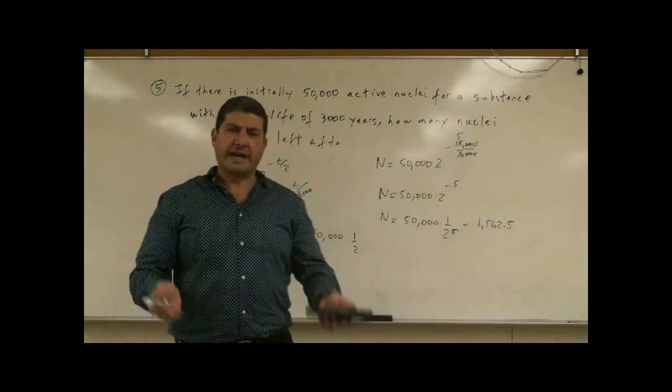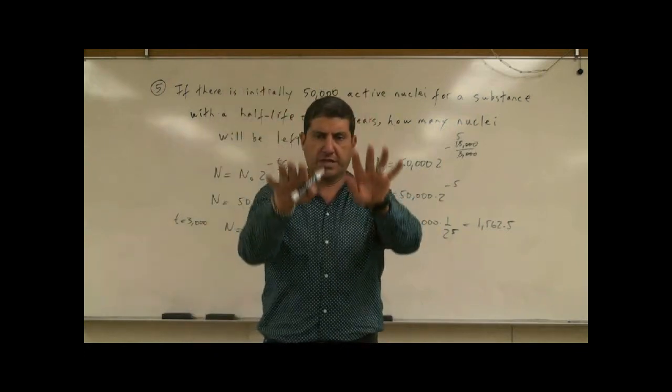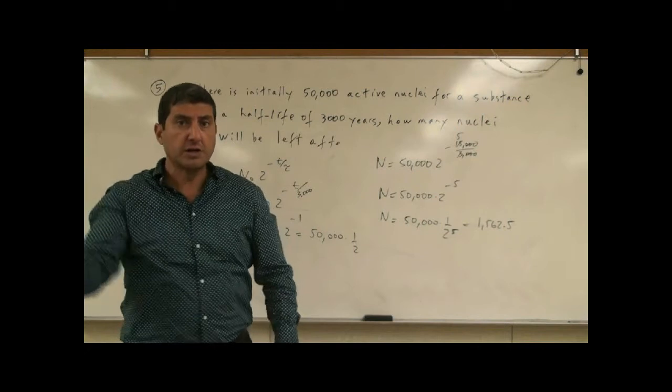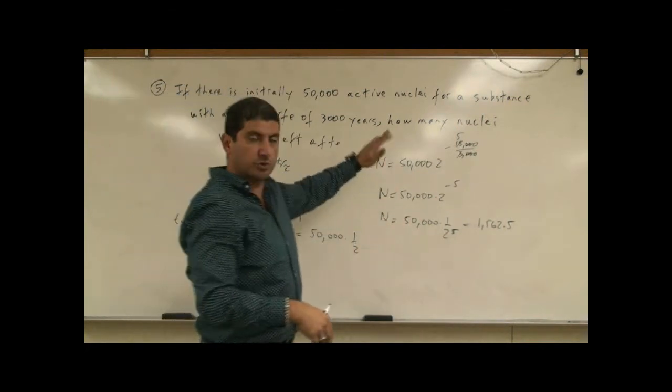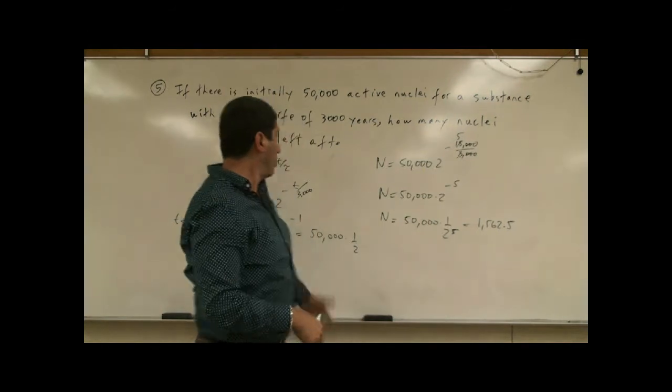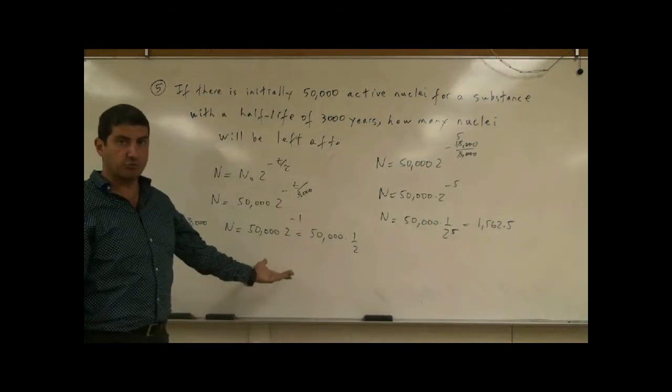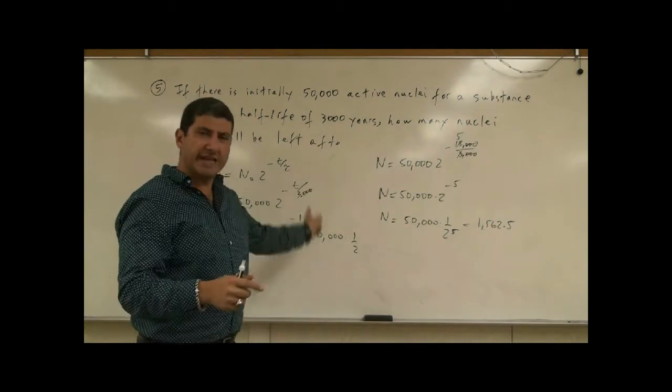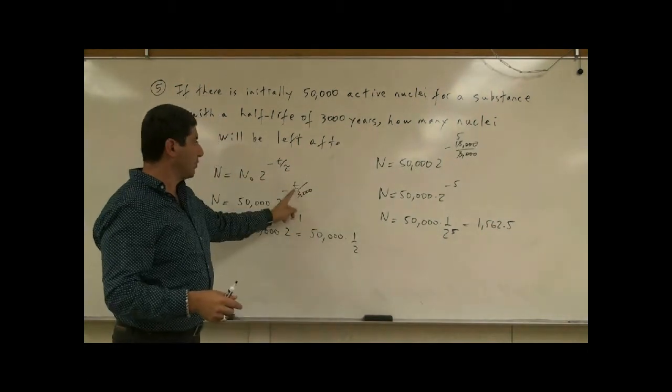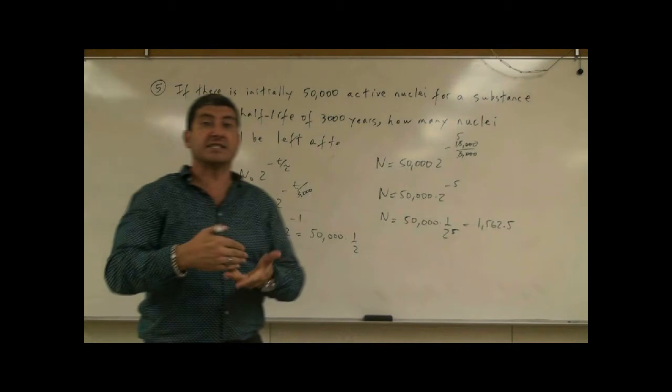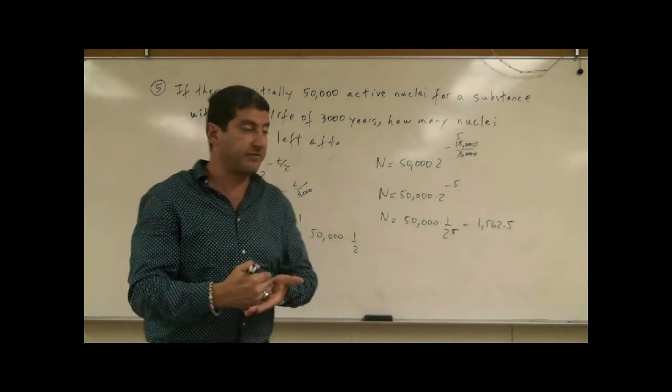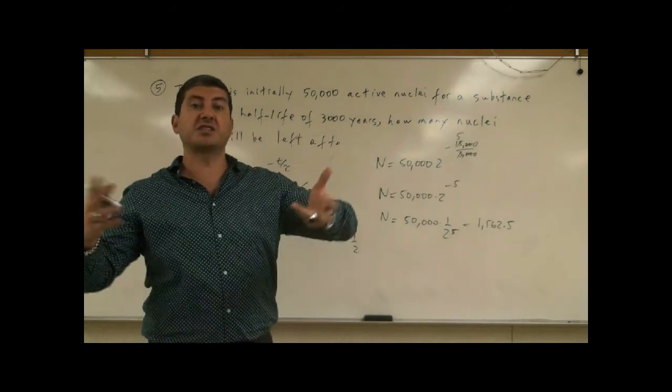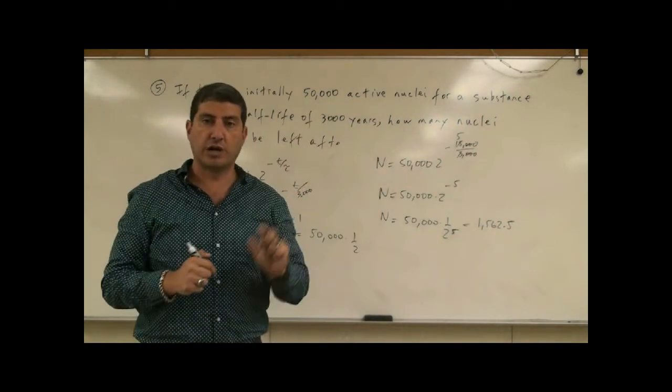So either way you look at it, whether you form a table and accumulate it that way, or you do it kind of quicker where you just say how many half-lives is it and you just do it like I showed you, or you do it the formal mathematical way, you're always going to get the same answer. The advantage of the mathematical way is if the time given is not a complete multiple of a half-life.